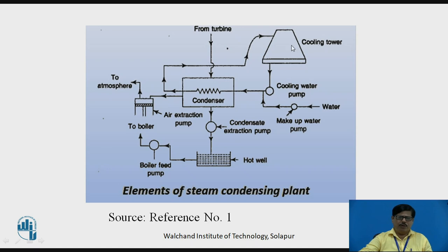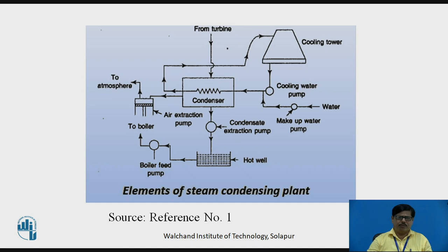If a large quantity of fresh water is not available for circulating inside the condenser, then we require an important device called a cooling tower. When the cooling water is circulated through the condenser tubes, it gets heated. This hot water is spread into the cooling tower, and due to the phenomenon of evaporation and direct contact between air and hot water, the cooling water gets cooled and is collected at the bottom of the cooling tower. This cooled water is then circulated through the condenser again using the cooling water pump. There are certain losses during evaporation, so makeup water is supplied with the help of a makeup water pump from a nearby source. These are the various elements of steam condensing plant and their function.